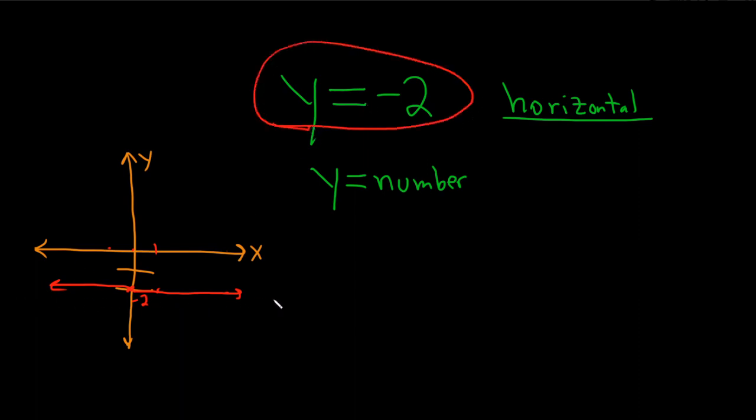So you're going to get infinitely many points where the y-coordinate is negative 2. So you'll end up getting a horizontal line, which we call y equals negative 2. I hope this video has been helpful to someone out there in the world. Good luck.